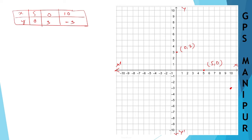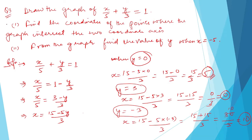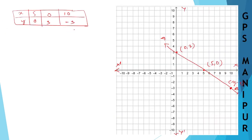Let me draw all three points and draw a straight line through them. This is the graph. Now, number one: they are asking to find the coordinates of the point where the graph intersects the two coordinate axes.